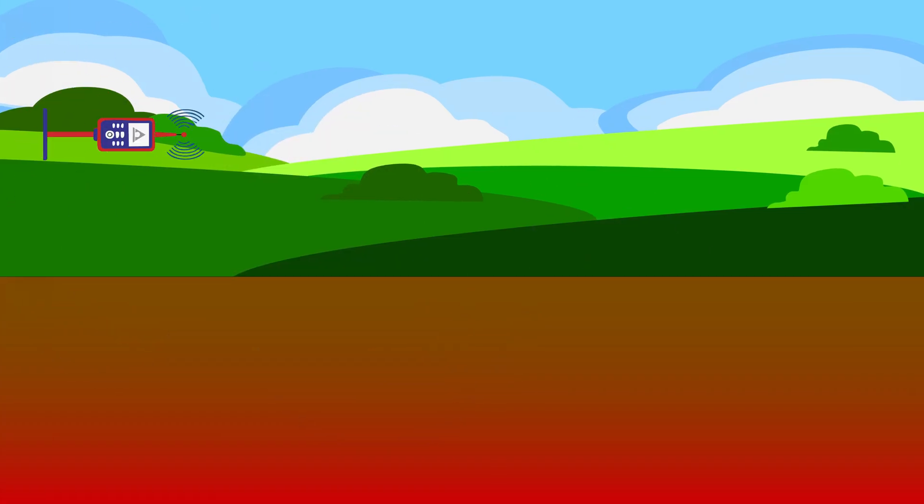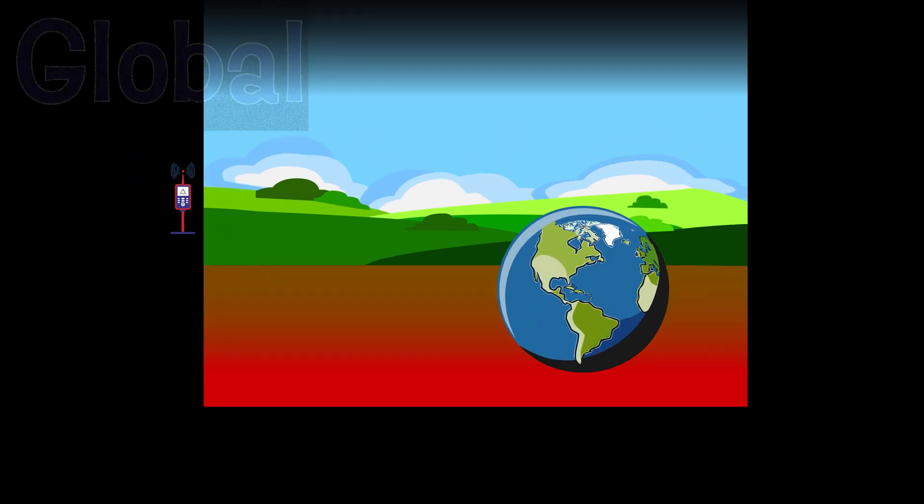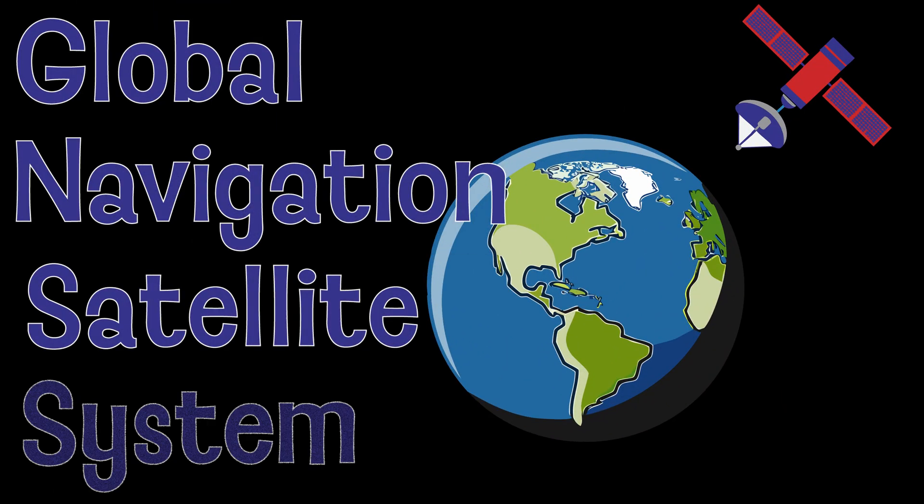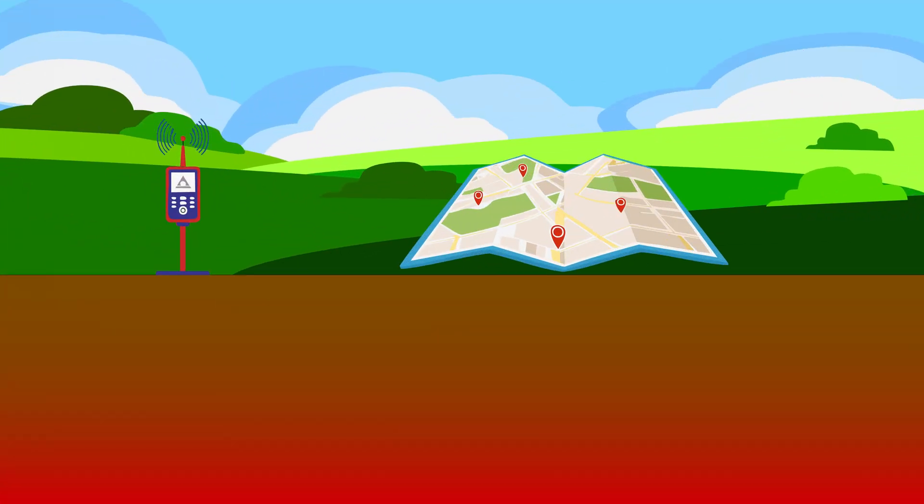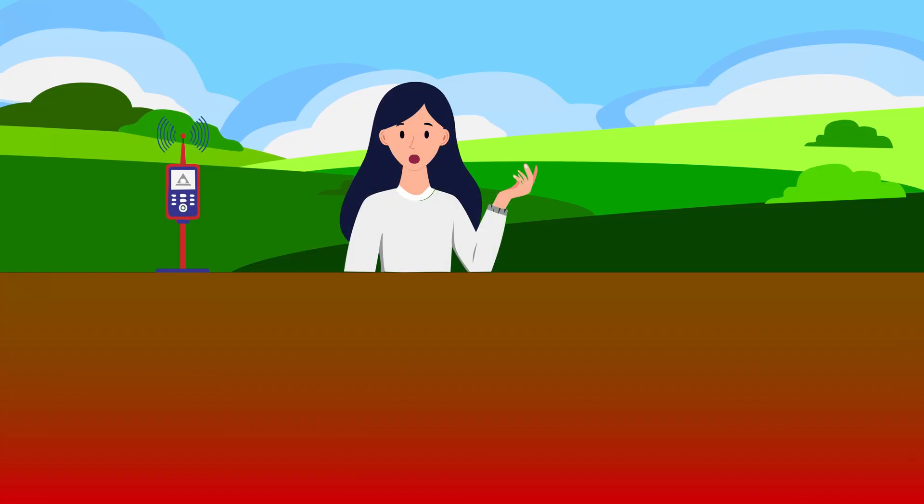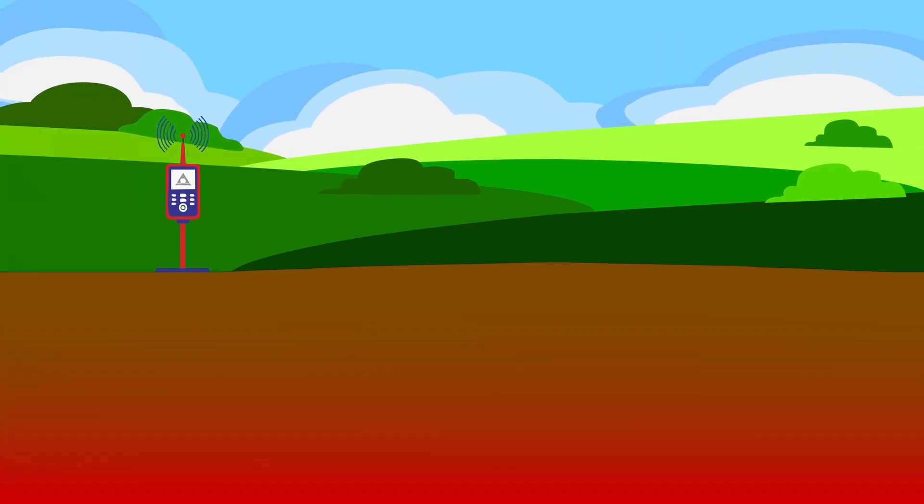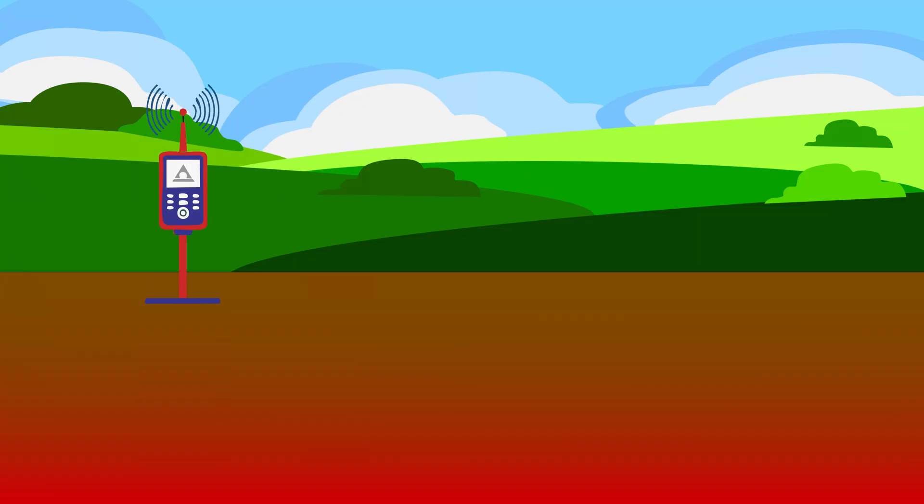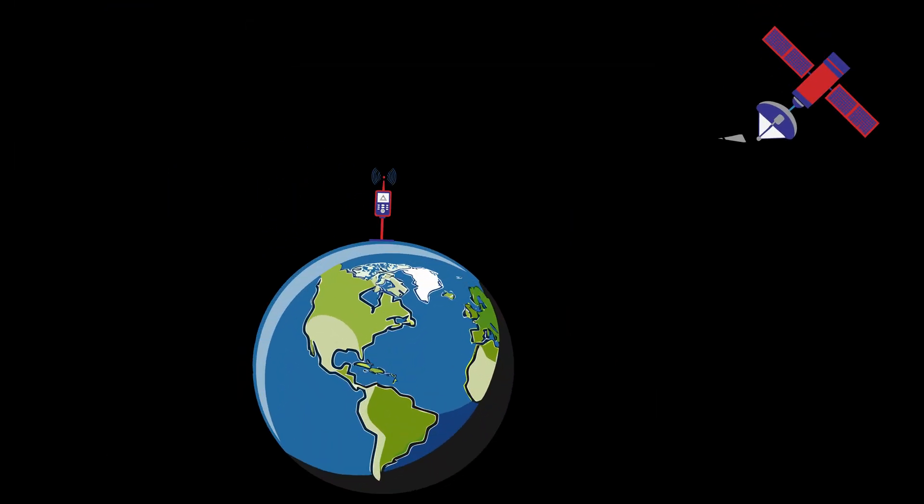Another powerful tool scientists use is GNSS, which stands for Global Navigation Satellite System. You've probably used GPS to find your way on a map, but scientists use high-precision GPS to watch the ground itself move, sometimes as little as the width of a fingernail. The Earth's surface is constantly shifting, rising, and sinking. So with GNSS, scientists can track these movements over time.